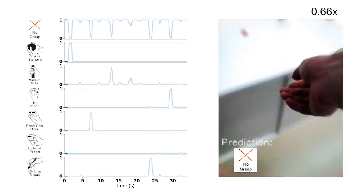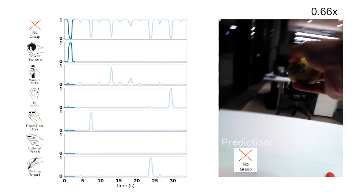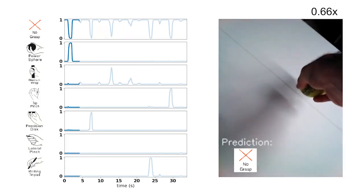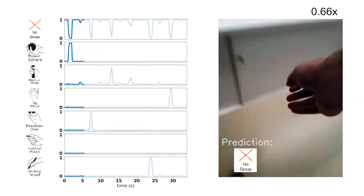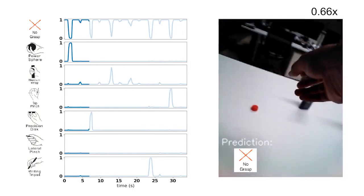We begin with a tennis ball, which correctly produces a power sphere grasp. This is followed by a bottle cap, which correctly produces a precision disc grasp.